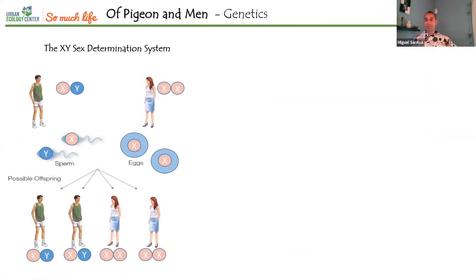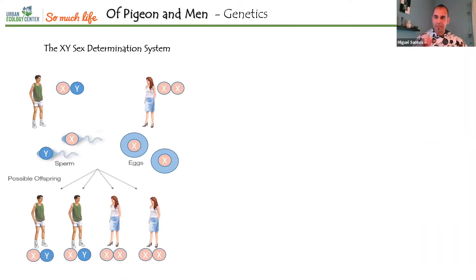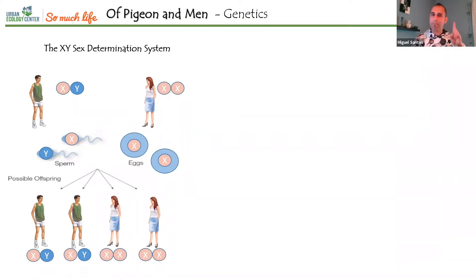Genetics is super fun and a very important part of this hobby. Here we have the XY sex determination system that we are familiar with — females have two X chromosomes, males have X and Y. For that reason, in humans the default sex would be female; however, males decide the sex of the offspring.